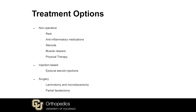However, when there is notable weakness or there is severe pain, especially when it doesn't respond to injections, you may be a candidate for surgery to take the pressure off of that compressed nerve, which is considered a very predictable option for improving the pain. There are many ways we can treat your lumbar radiculopathy. Your first step is to meet with a CU spine specialist for an evaluation so we can work together on the right treatment plan for your unique case.